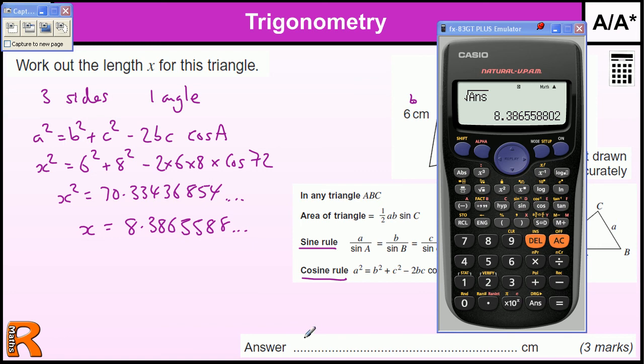So, to 3 significant figures, we put 8.39. We could put 8.4. We could probably even put 8. But best to keep it fairly accurate and round it to 3 significant figures.